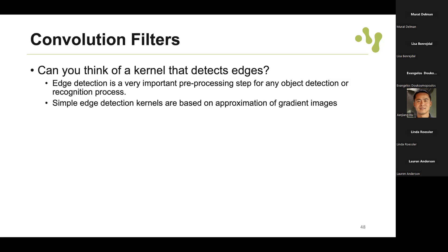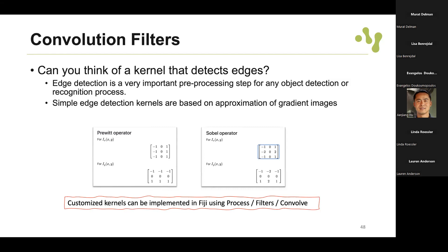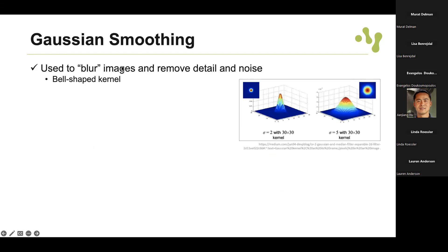You can define your own kernel. Edge detection is a very important pre-processing step for many object detection and recognition tasks. One example is the Prewitt operator - we have two kernels to filter both vertically and horizontally, basically subtracting the right side from the left side and vice versa for horizontal and vertical detection. The Sobel operator is another example. Customized kernels can be implemented in Fiji for specific tasks.